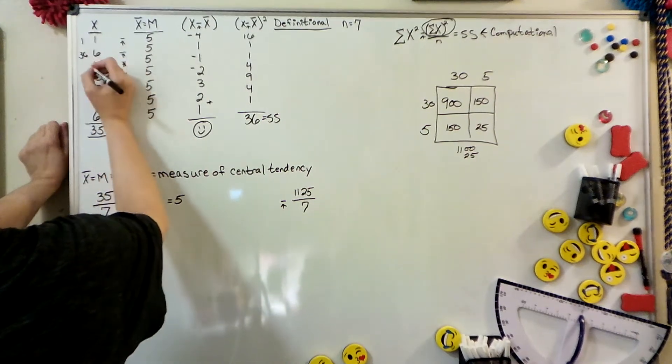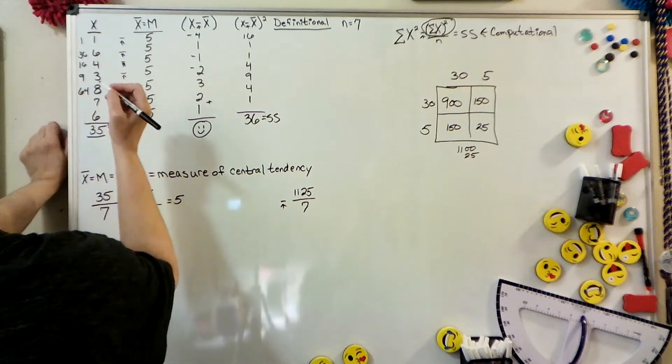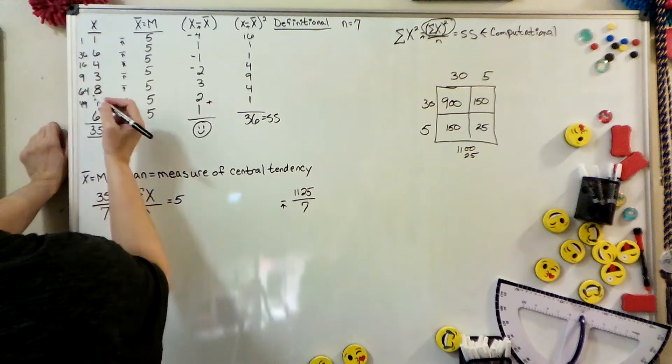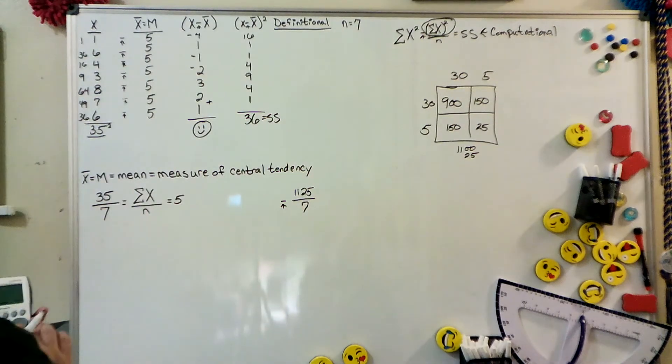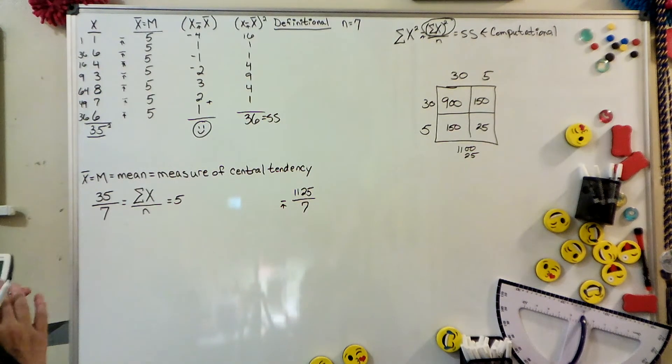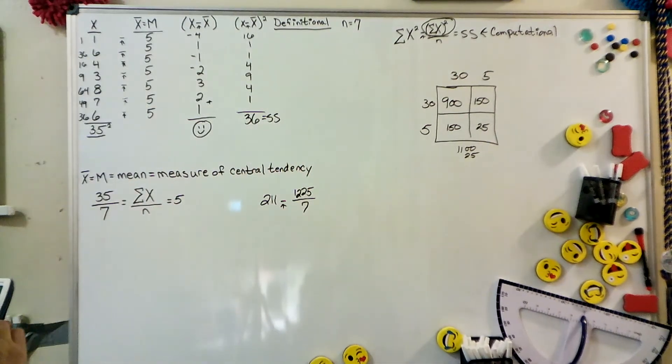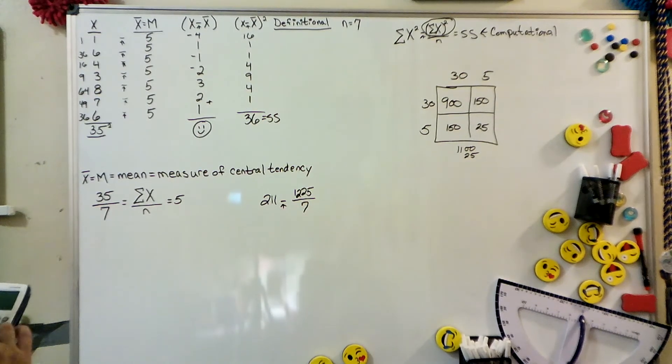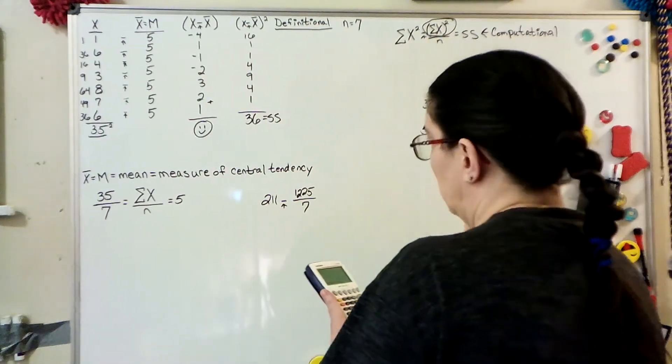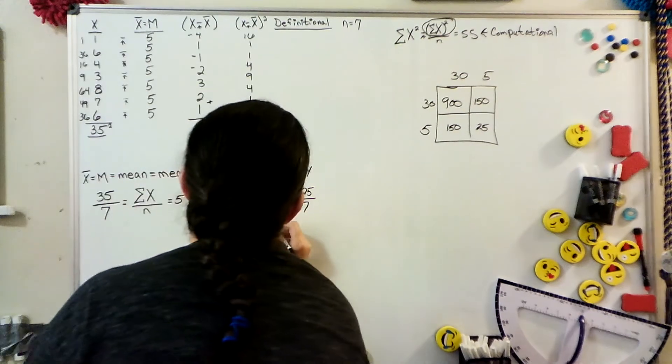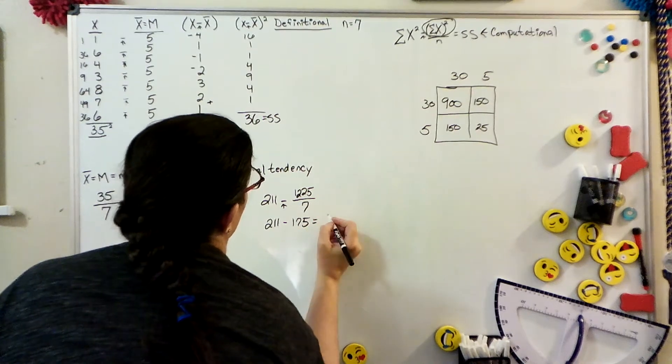Then you add those all up. That comes out to 211. As you notice, I fixed my issue. So it's 211 minus 175, which equals 36. You come up with the same number no matter whether you use the definitional or the computational formula.